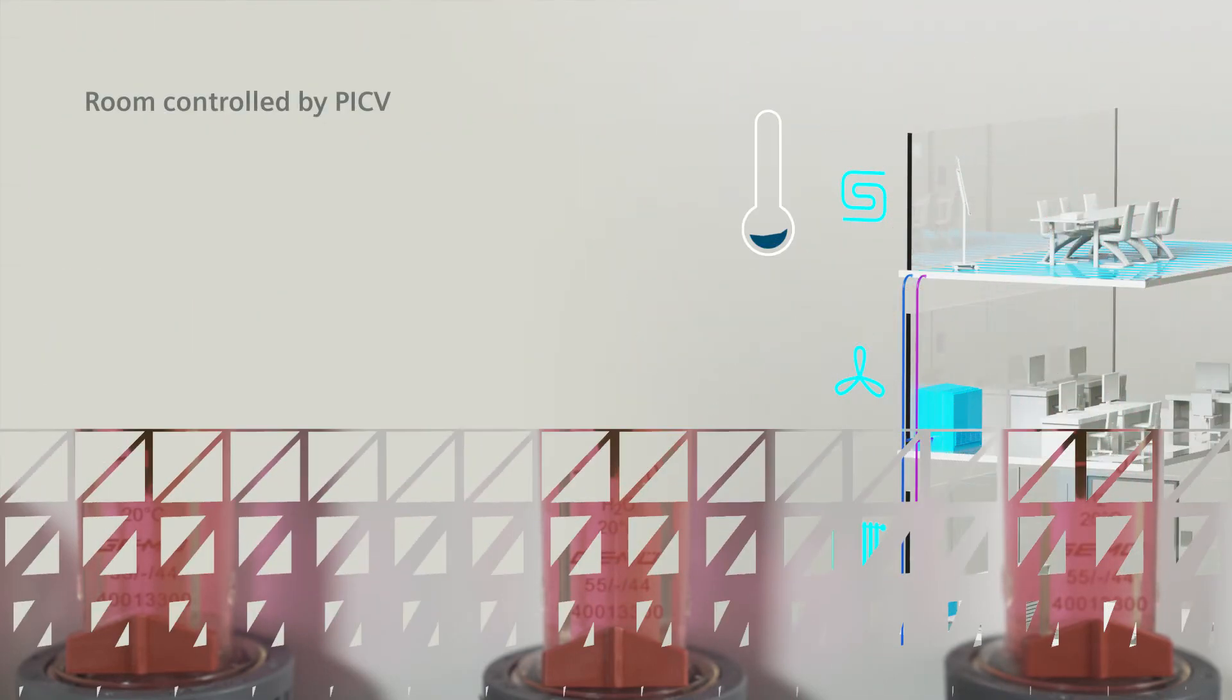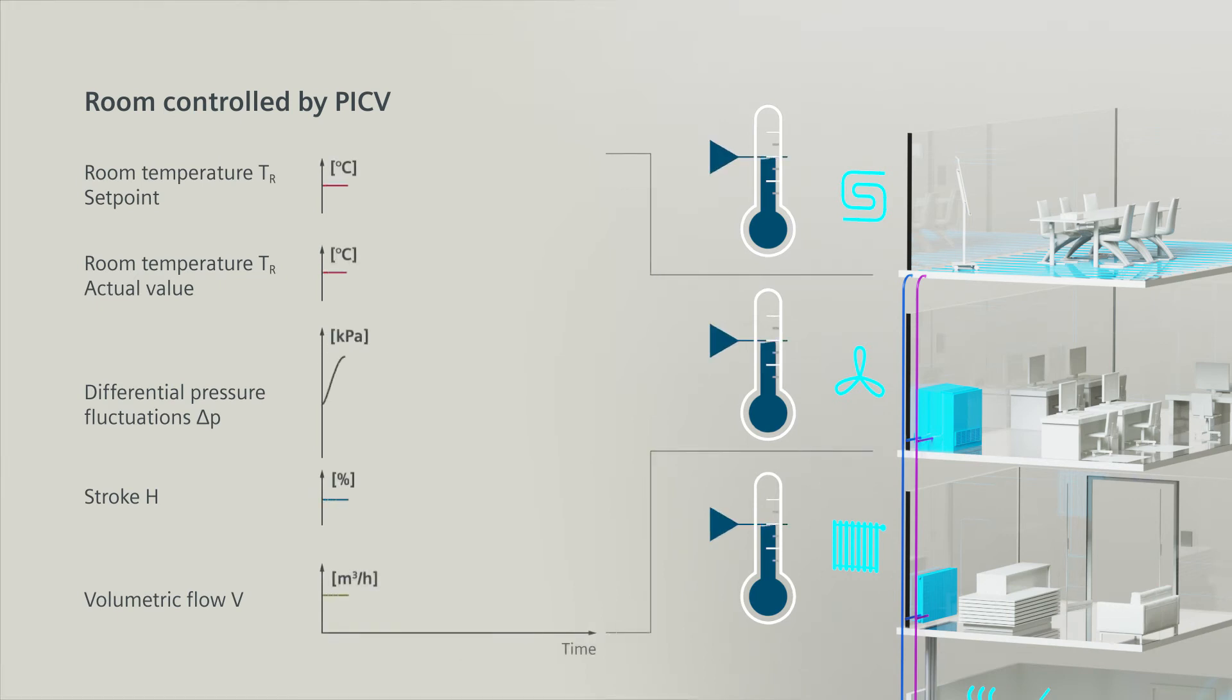The benefit is obvious. The volumetric flow and the room temperature stay at the desired set point, regardless of pressure fluctuations. The volumetric flow in the other lines also stays unchanged and so does the room temperature.